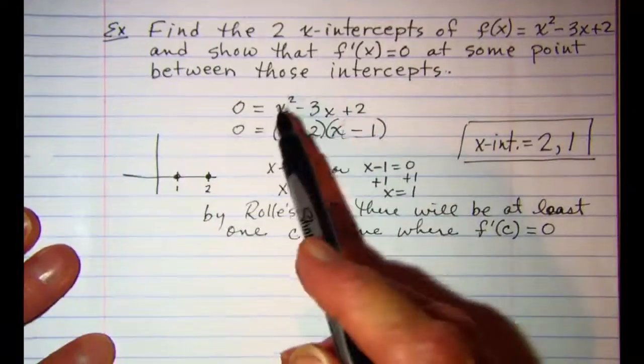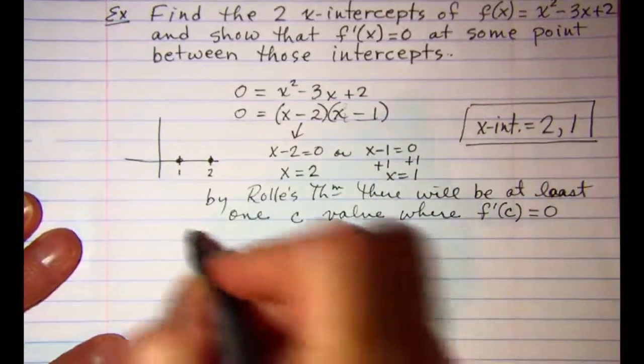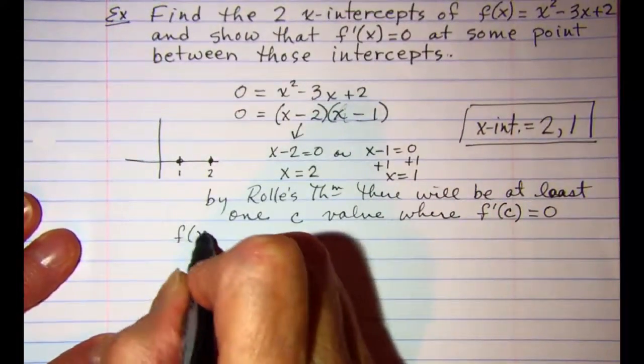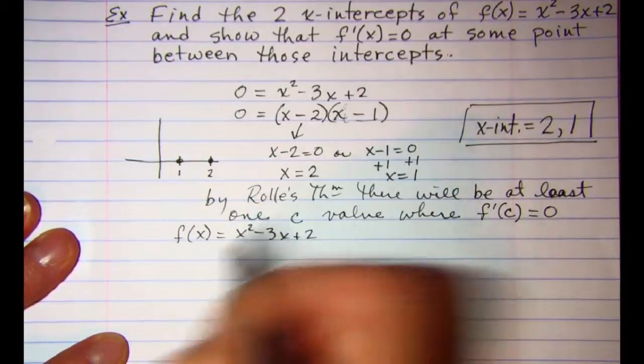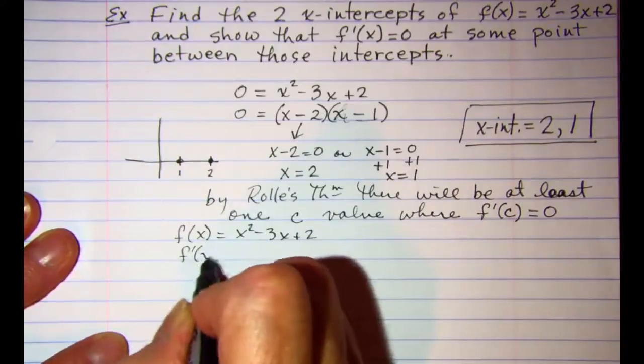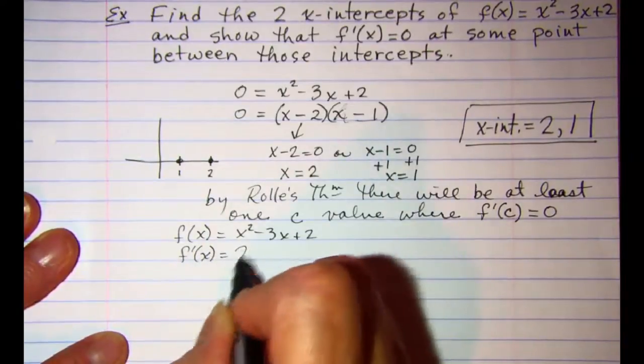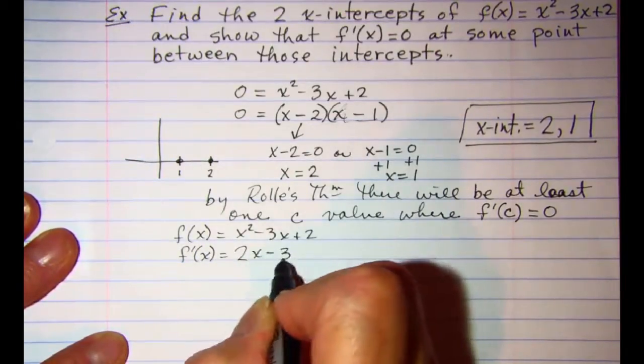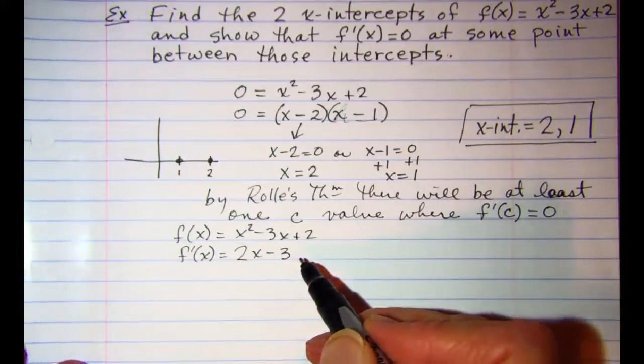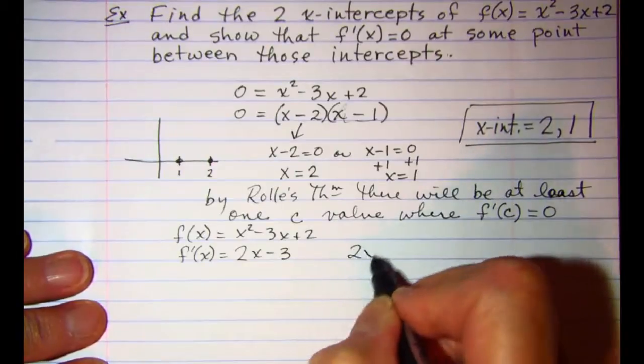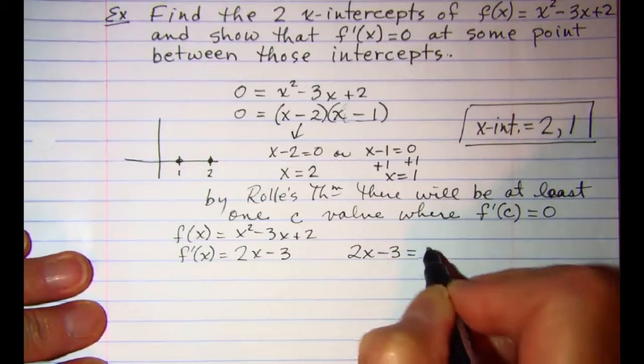The derivative of f, let me copy f again, f is equal to x squared minus 3x plus 2. So our derivative is 2x minus 3. Now if we set that equal to zero, 2x minus 3 is equal to zero.